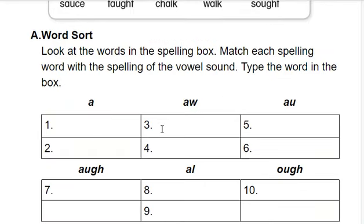Now you're going to do the worksheet. I'm going to read the directions for you. Word sort. Look at the words in the spelling box. Match each spelling word with the spelling of the vowel sound. You can't type the words in the box — you're going to print it out and write them.